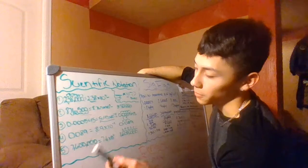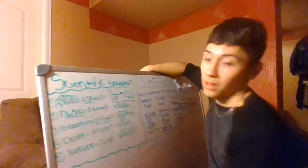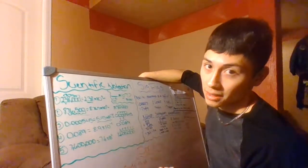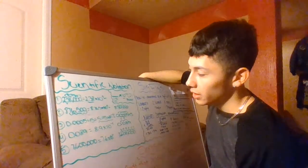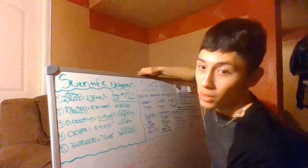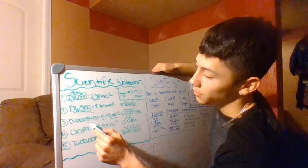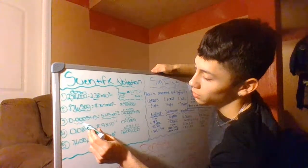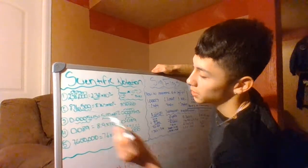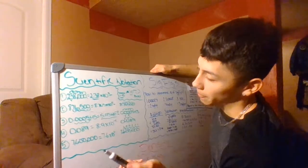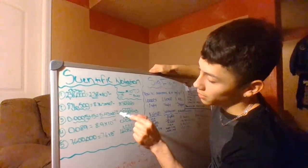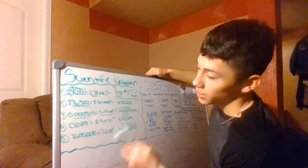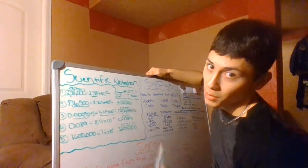In some cases you're going to have to move to the right instead of the left, so you'll end up with a negative exponent. For example, number three: 0.000543. You move from the decimal one, two, three, four places to get 5.43, and since you moved four places to the right, the answer is 5.43 times 10 to the negative four.